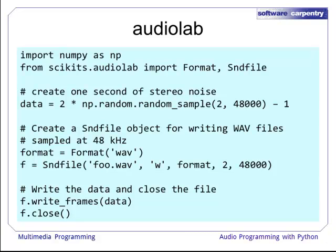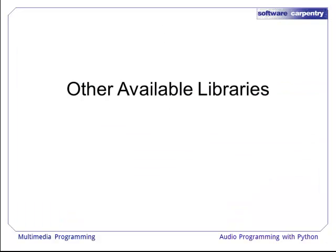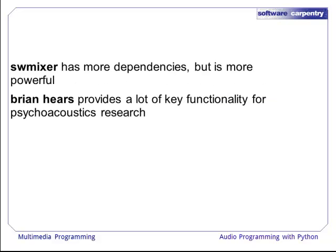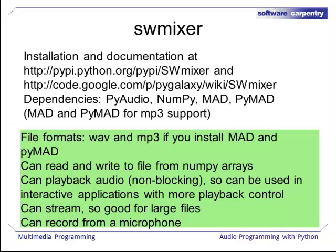That's the basics of what you can do with AudioLab, but there are other available libraries that may be suitable for your needs. Two in particular are SW Mixer and Brian Hears. SW Mixer has more dependencies but is a far more powerful audio engine, while Brian Hears provides key functionality for psychoacoustics research. To install and use SW Mixer, visit the provided link. SW Mixer has a large number of dependencies including PI Audio (built on top of Port Audio), NumPy, MAD, and Pymad if you'd like MP3 support.